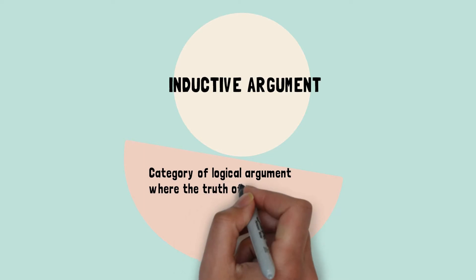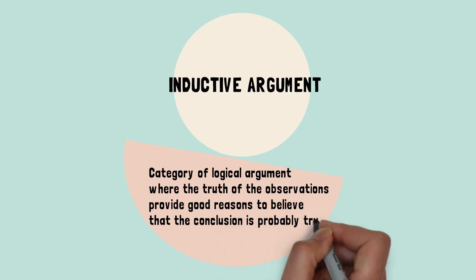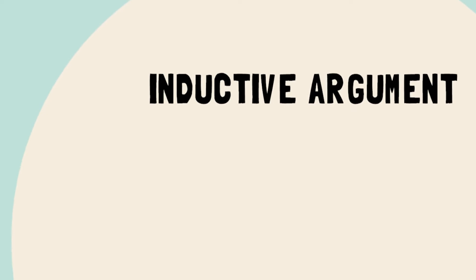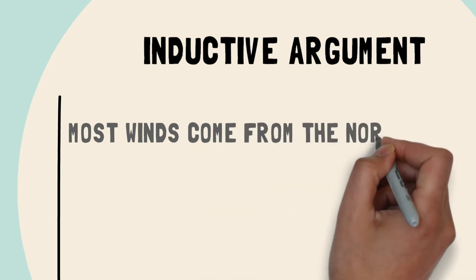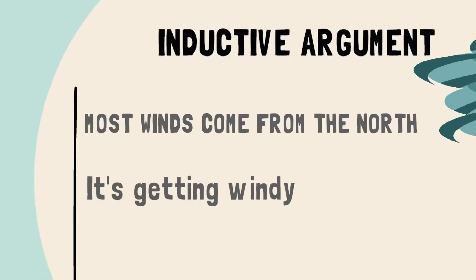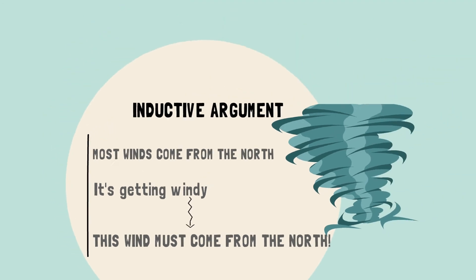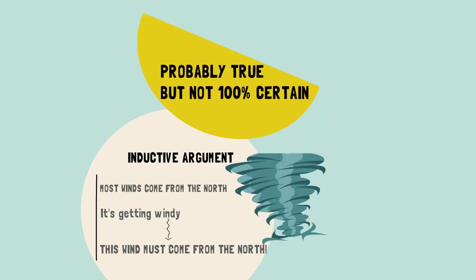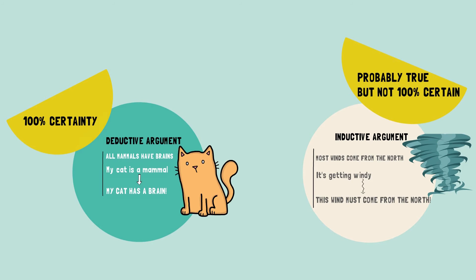By contrast, an inductive argument is a type of logical argument where the truth of the observations provides good reasons to believe that the conclusion is probably true. For example: Most winds come from the north. It's getting windy. Therefore, this wind must come from the north.